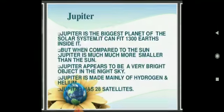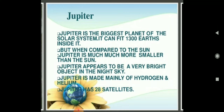Jupiter is the largest planet in the solar system. It can be seen with the naked eye and looks like a bright star. Its most distinguished feature is the Great Red Spot. Jupiter has 28 satellites and is made mainly of hydrogen and helium.